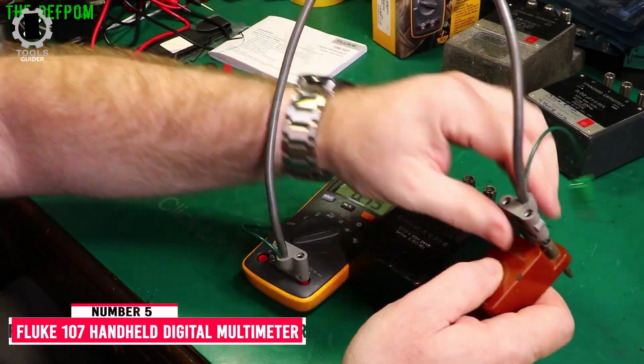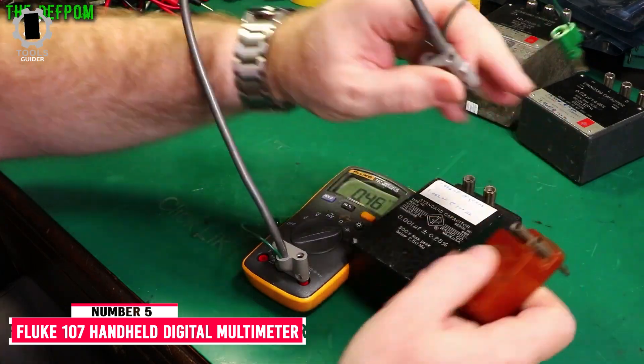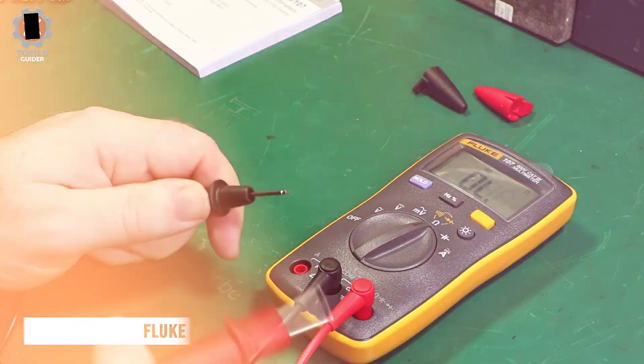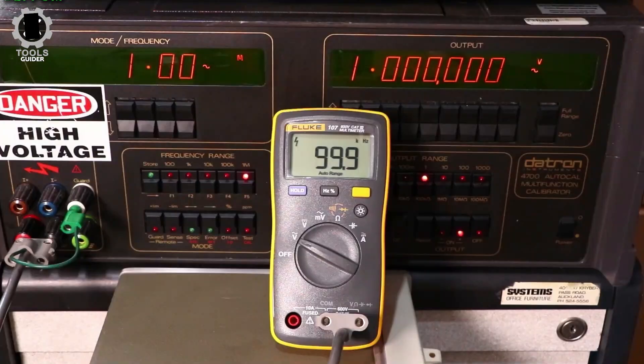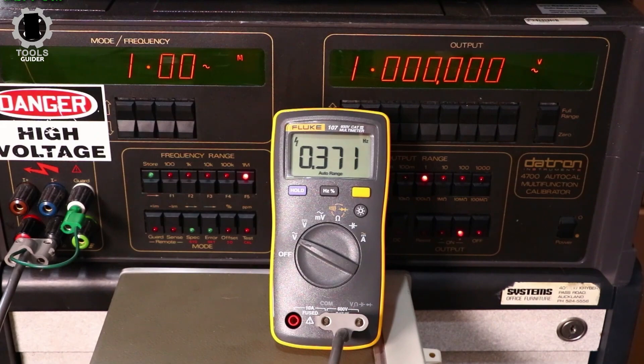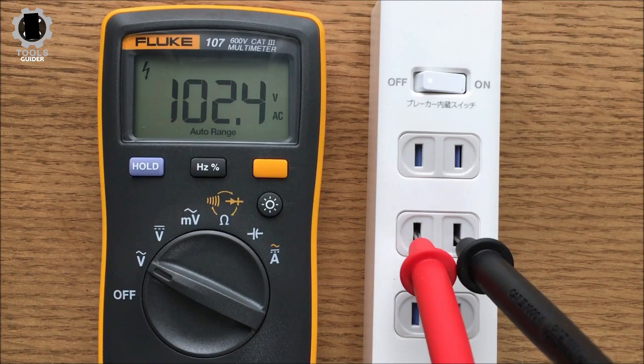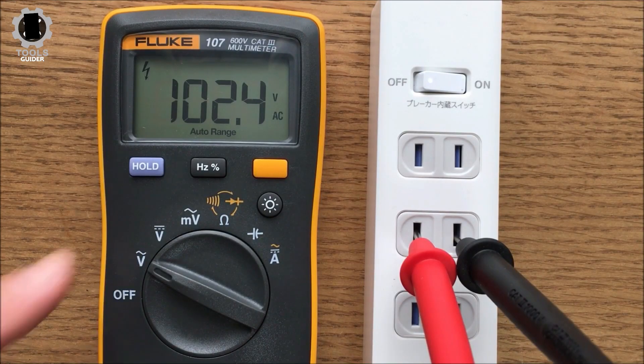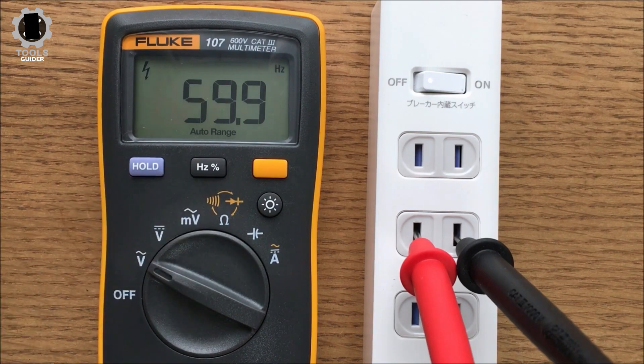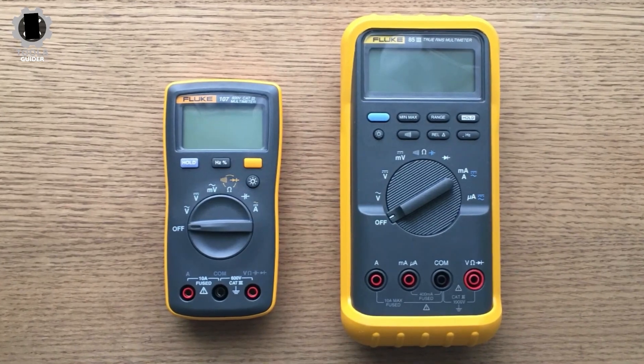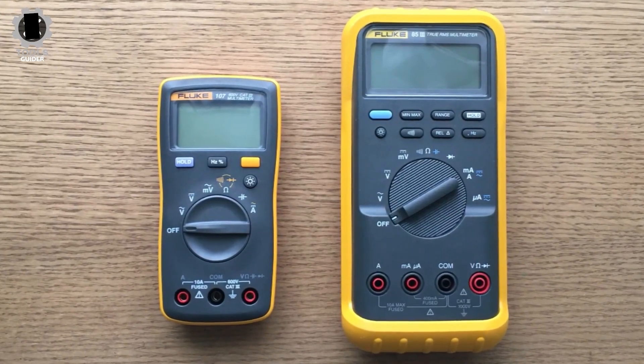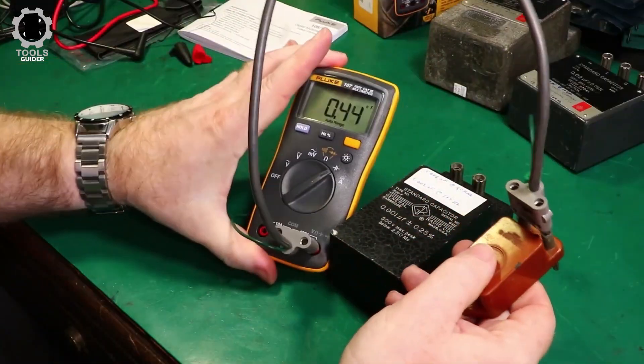Number 5. Fluke 107 Handheld Digital Multimeter. The Fluke 107 Handheld Digital Multimeter is a compact, easy-to-use tool. It is a palm-sized digital multimeter that delivers safe, reliable measurements time after time. The Fluke 107 has a simple design with functions for testing voltage, amperage, resistance, capacitance, and even frequency. It comes with a basic set of test leads and a magnetic strap that can hang from an electrical box or pipe hands-free.